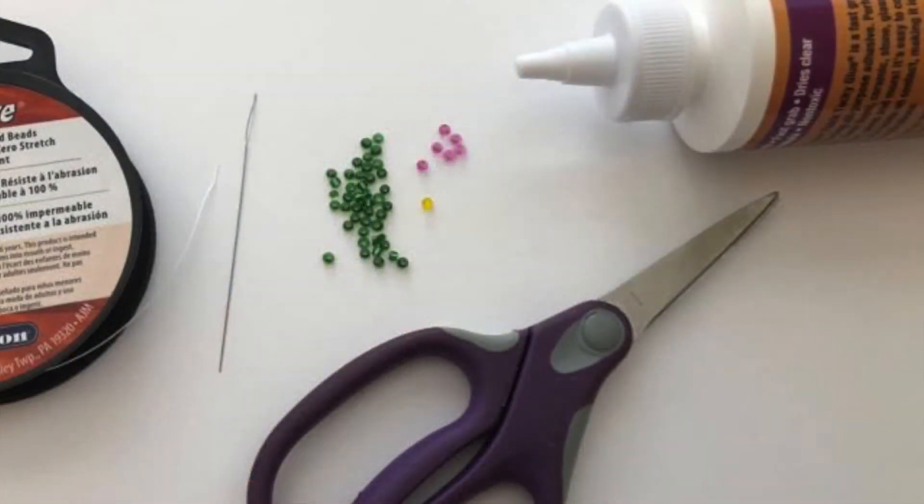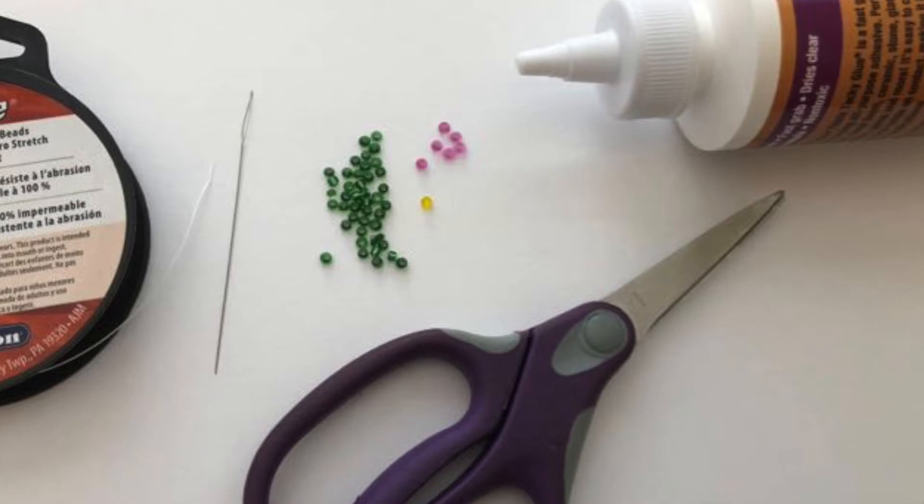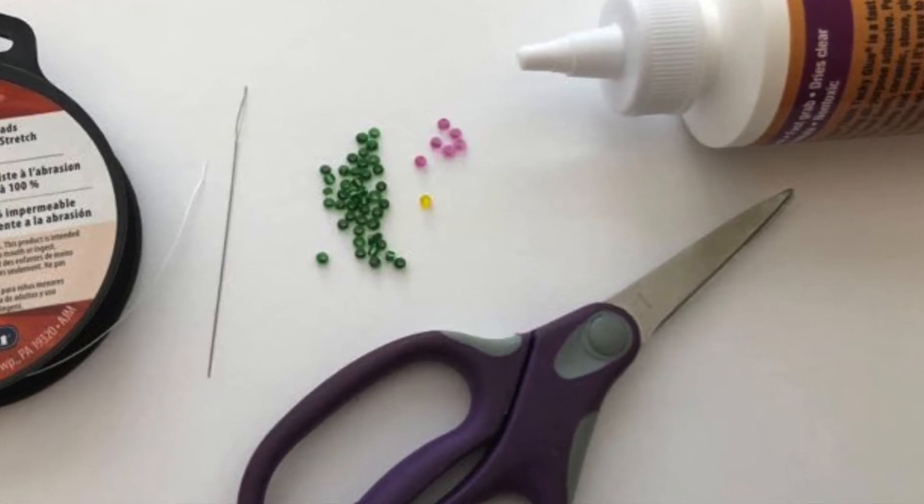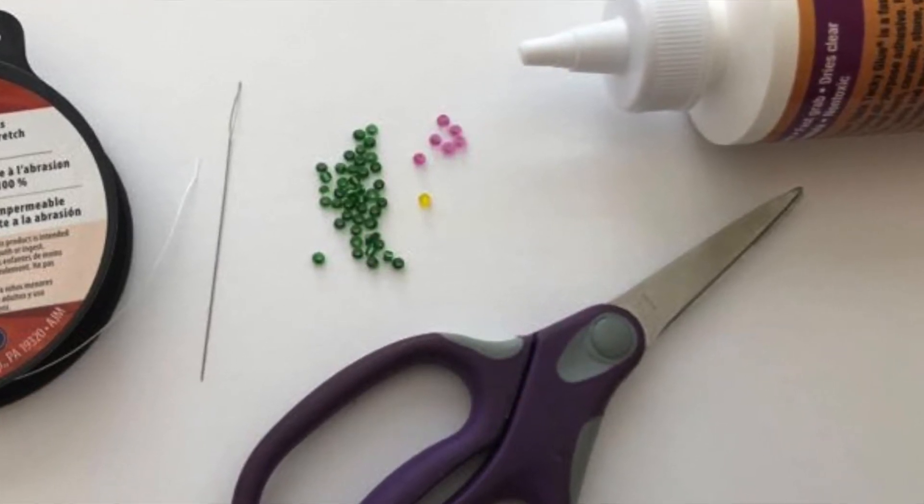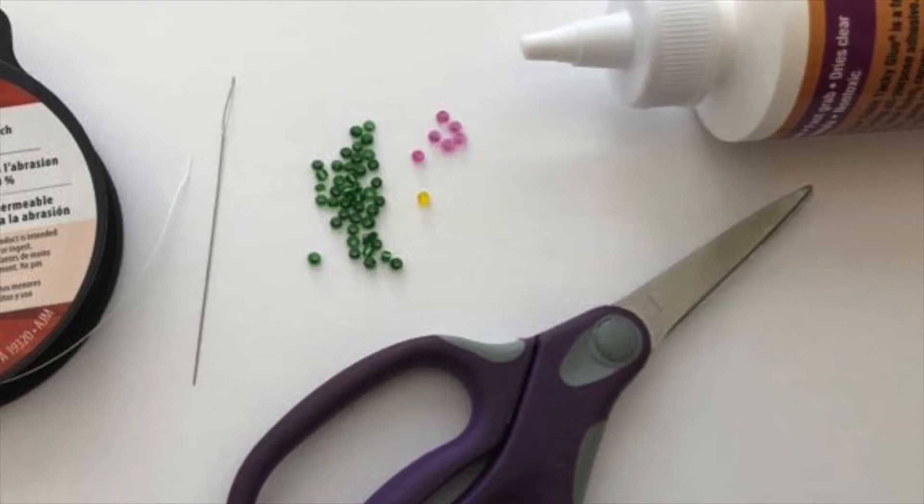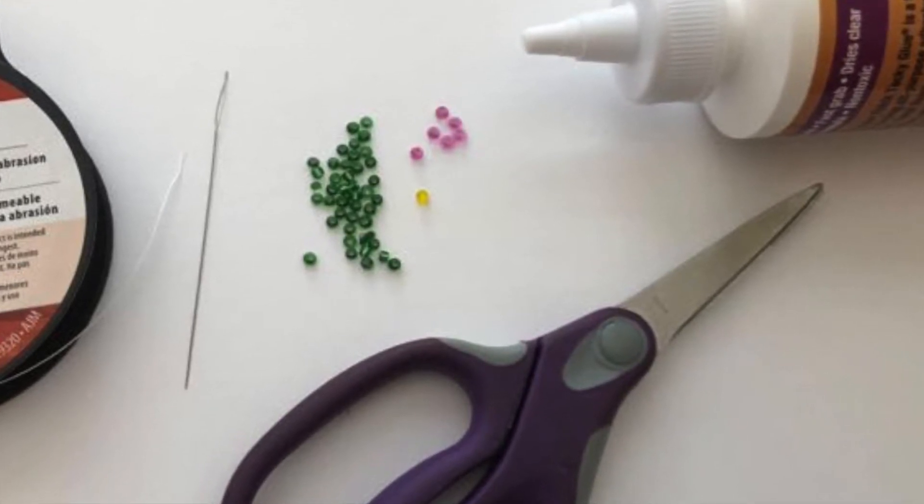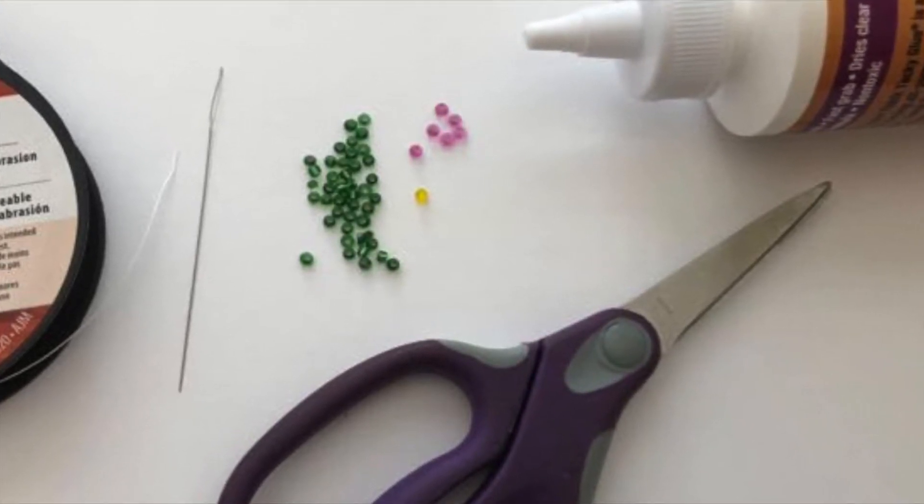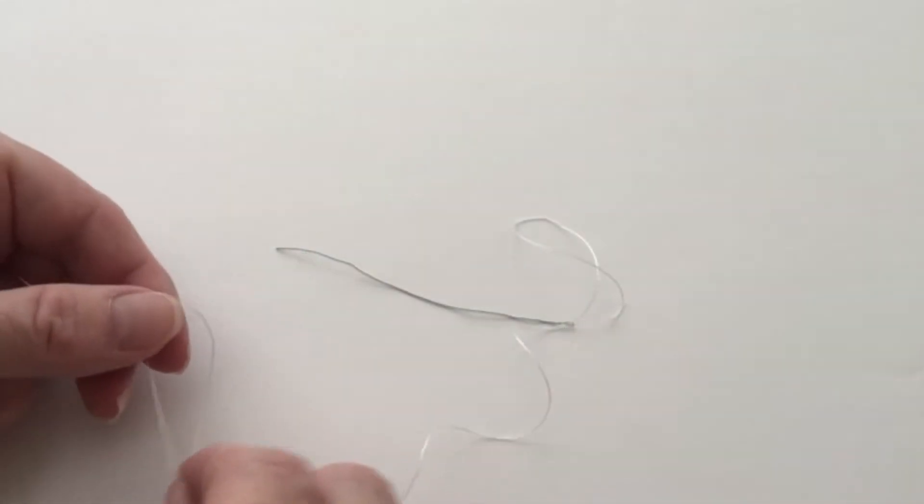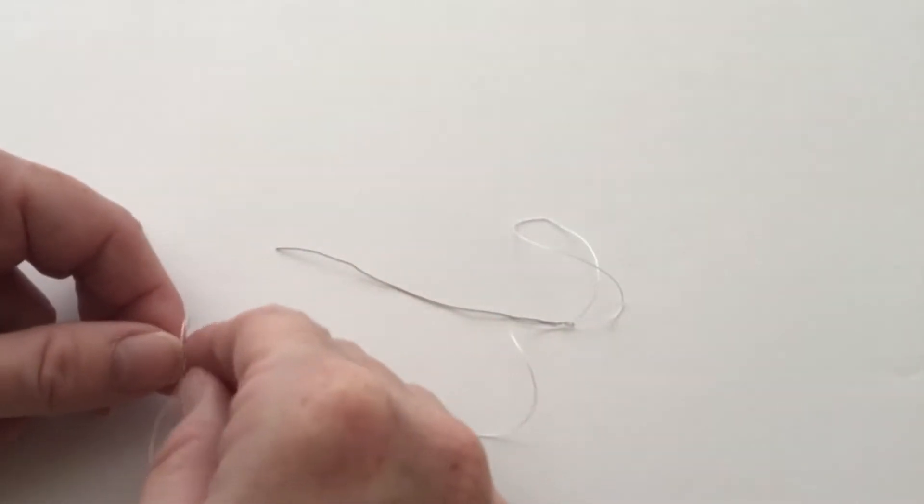For this project you'll need about 12 inches of beading cord, a beading needle, green, pink, and yellow seed beads, scissors, and glue or clear fingernail polish.